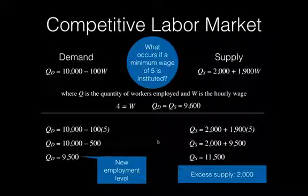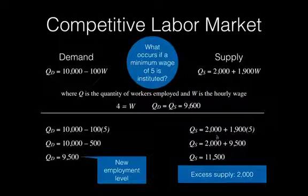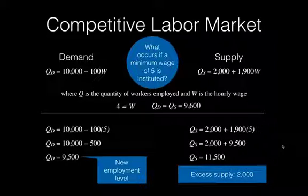The excess supply is 11,500 minus 9,500, which gives us an excess supply of 2,000. We have 100 people who are laid off, but additionally 1,900 people have entered the labor market who weren't officially part of it because the wage rate was too low. By raising the minimum wage to $5, this causes 1,900 individuals to enter into the market.